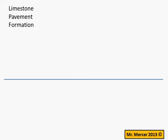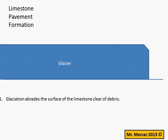The blue line that you see on your screen represents the surface of the limestone. The first stage in the process of limestone pavement formation is that a glacier comes along and through the processes of abrasion and plucking it cleans the limestone of its muddy surfaces. Here comes the glacier — through abrasion and plucking it wears away the soil and debris that's covering the surface of the limestone itself.